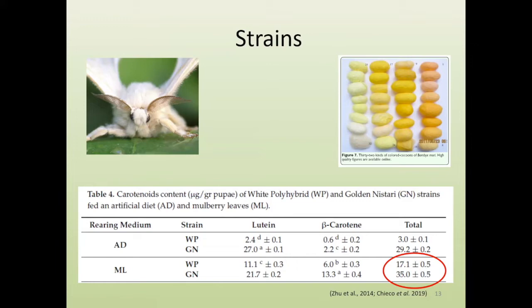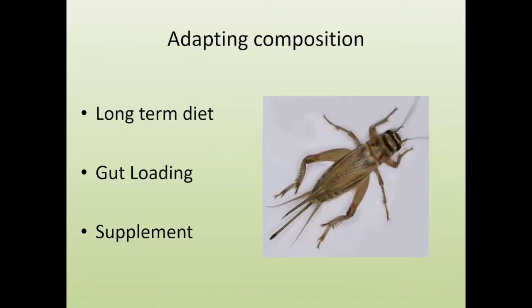Even the strain of insect you're rearing can affect the nutritional outcome. To adapt the composition of an insect — using the house cricket as an example — you can do so through the long-term diet, through gut loading, or through supplements dusted on the outside. Gut loading — what the insect eats shortly before being fed off — can comprise up to 10 percent of dry matter content and can have a fairly large effect. Supplements coated on the outside are used primarily for calcium and vitamins.